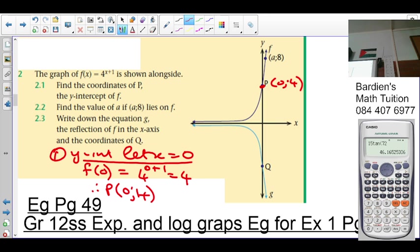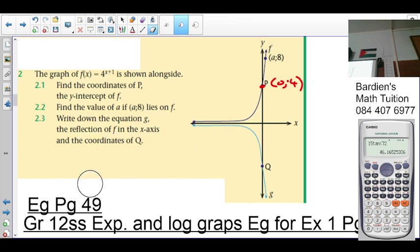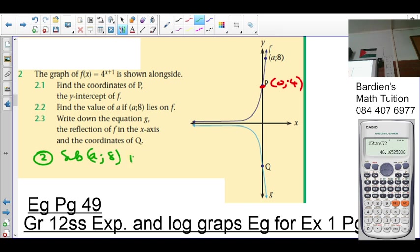You look at 2.2. Find the value of a if (a, 8) lies on f. What we do is substitute a and 8 into f of x, into that equation of that function. Remembering that's the x and the y. F of x is a y. In coordinate form, that is an x and that is a y. So I would say now 8 equals 4 to the a plus 1. Again, it's your exponential equation. What do we have to do? We have to make the bases the same for the exponents to be equal. So 8 can be written as 2 cubed, 4 can be written as 2 squared raised to the exponent a plus 1.